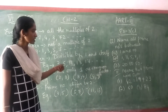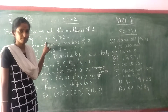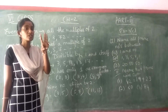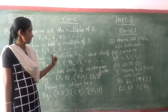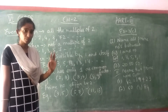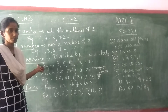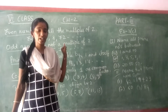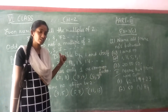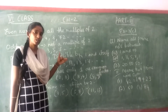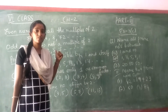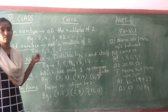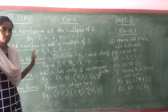So if you take 4 — 4 goes in the 1 table, 2 table, and 4 table, which means it is having 3 factors. So if a number is having only 2 factors — 1 and the number itself — then we call it a prime number. If it is having more than 2 factors, like 4 and 8, then we call it a composite number.